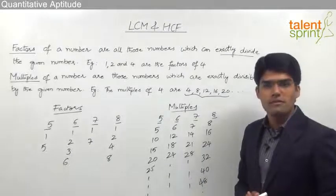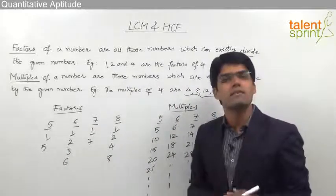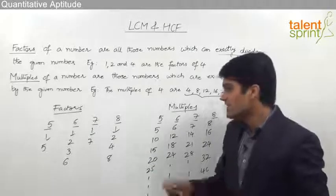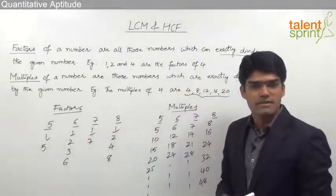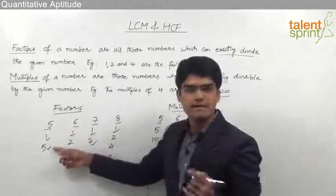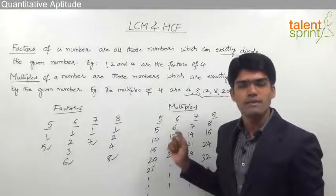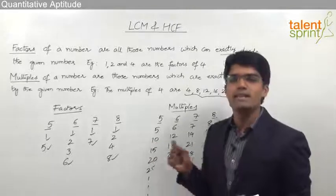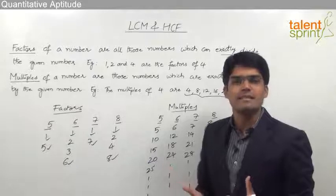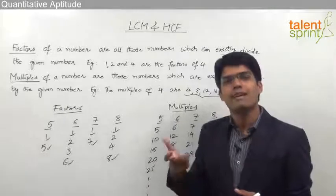One important point to observe is that the number 1 is a factor for all numbers, because every number is always exactly divisible by 1. Also, the number itself is always a factor of the given number — for example, 5 is divisible by 5, 6 by 6, 7 by 7, and 8 by 8. Any number, such as 29 or 27, is always a factor of itself.